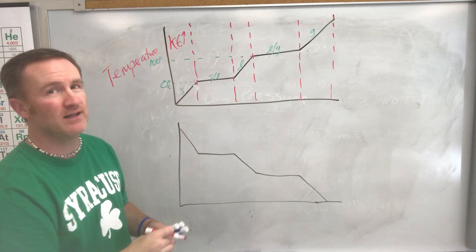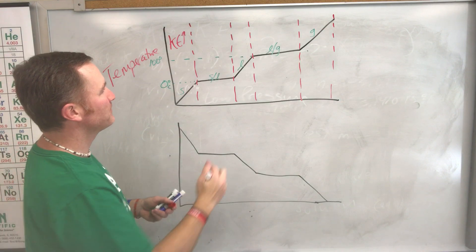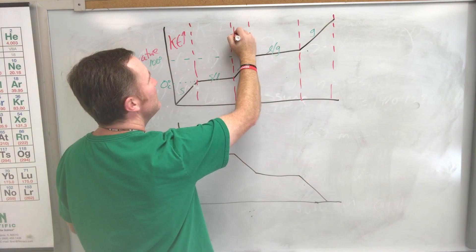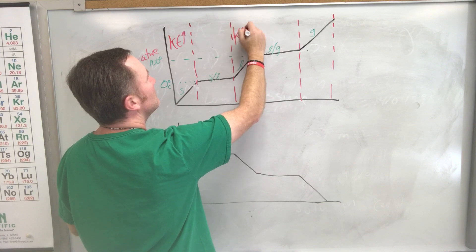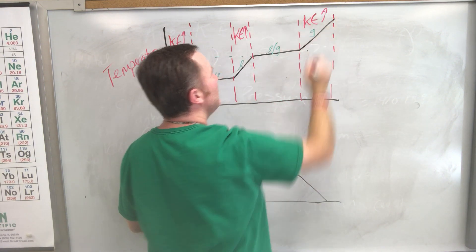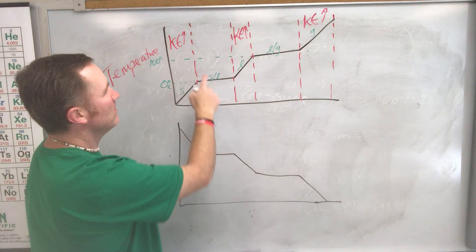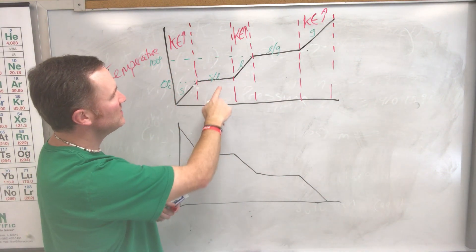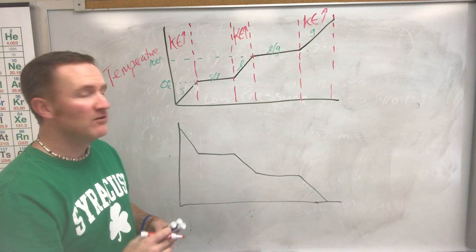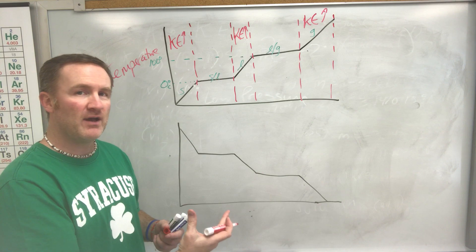So we have a KE increase in this section here where we see the increase in the temperature on the graph, just like we have it in the liquid phase. We have a KE increase, and then at the very end of the chart, KE increase over there as well.